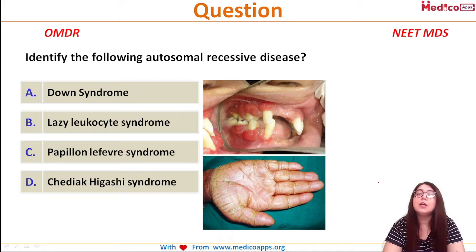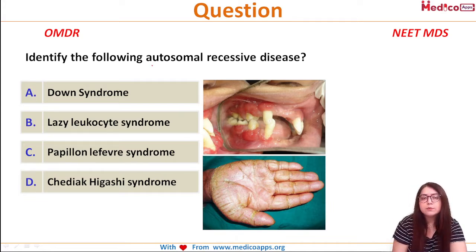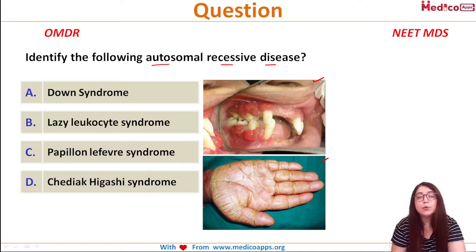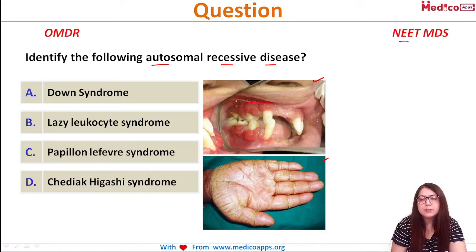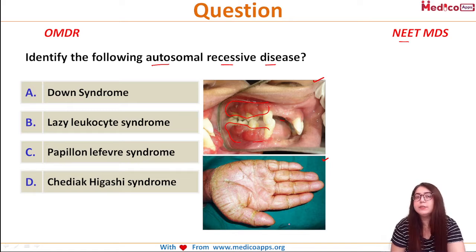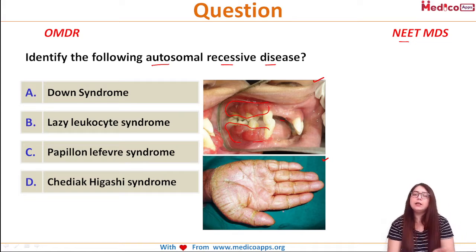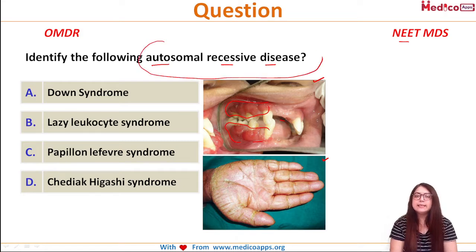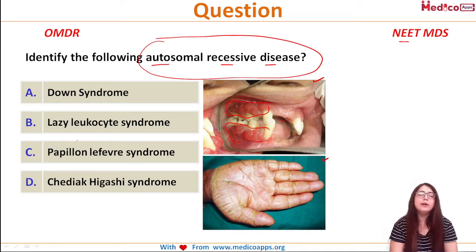Today's question is: identify the following autosomal recessive disease or disorder. Two pictures were given. This question is from oral medicine and radiology and has been asked in the NEET PG examination. In the first image you can see inflammation of the gingiva and missing teeth, and in the second image you can see hyperkeratinization of the palmar surfaces. The options given were Down syndrome, lazy leukocyte syndrome, Papillon-Lefèvre syndrome, and Chédiak-Higashi syndrome.